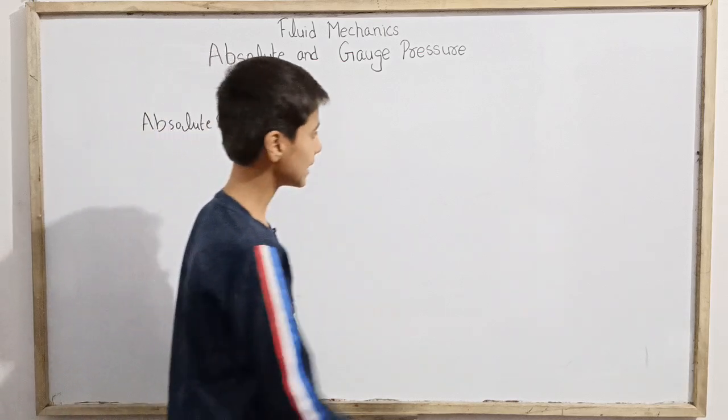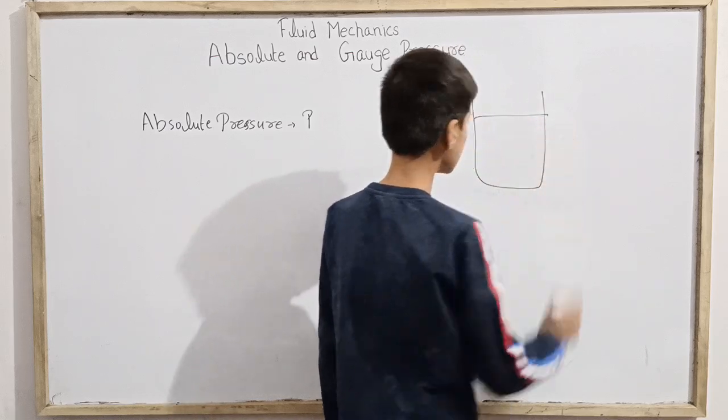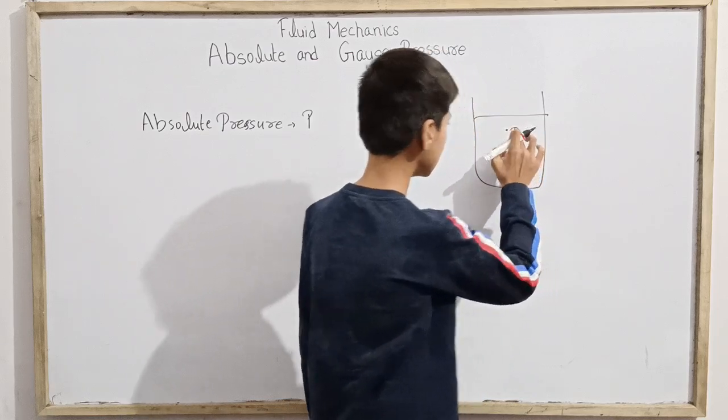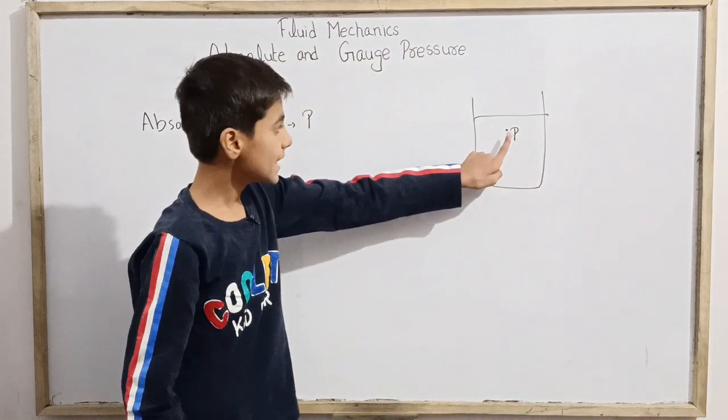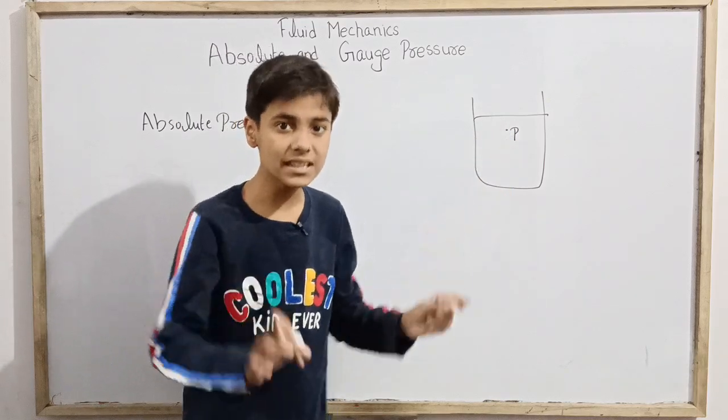Take a fluid container. At a certain point we defined pressure P. At this point, the pressure of this point is absolute pressure.